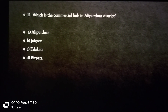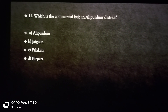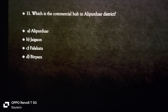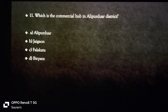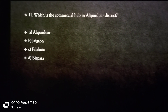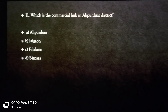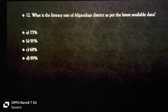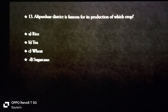What is the commercial hub in Alipurduar district? Alipurduar district's most important commercial hub is on the eastern and northeastern side of the town. The Bhutan border is located on the West Bengal side. What is the literacy rate of Alipurduar? It is 91.03%, so option B — 91%.